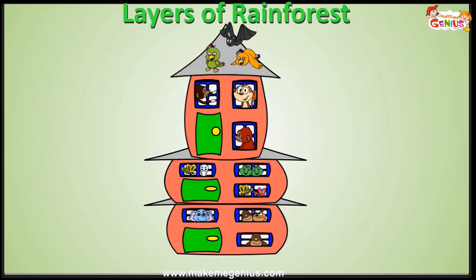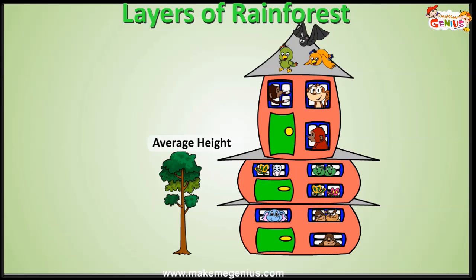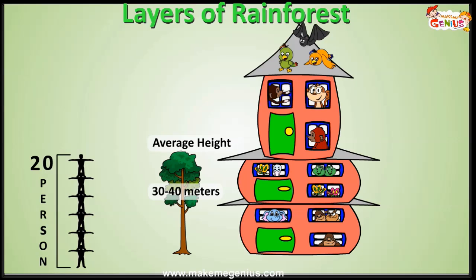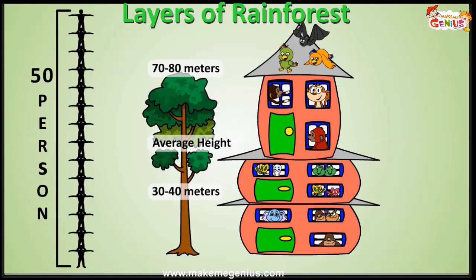Different types of animals live at different heights. Based on the height, a rainforest can be divided into four layers. The average height of a tree in a rainforest is about 30 to 40 meters, approximately the height of 20 persons standing above each other. But some of the tallest trees can go up to 80 meters — equal to the height of 50 persons standing over each other.